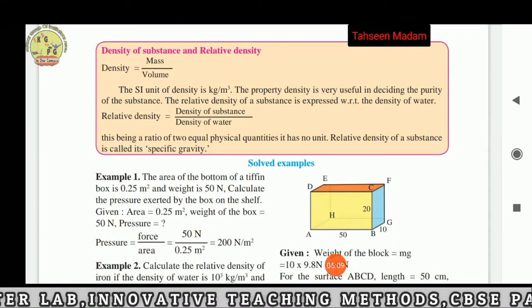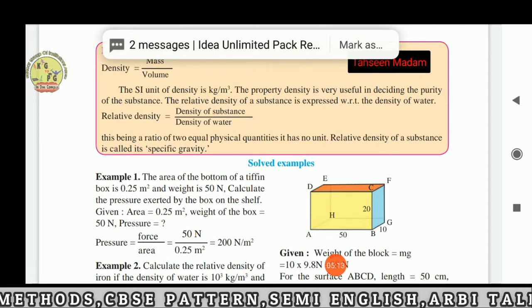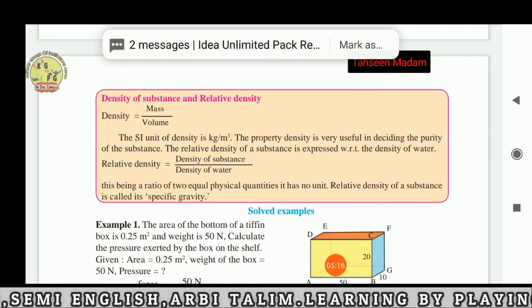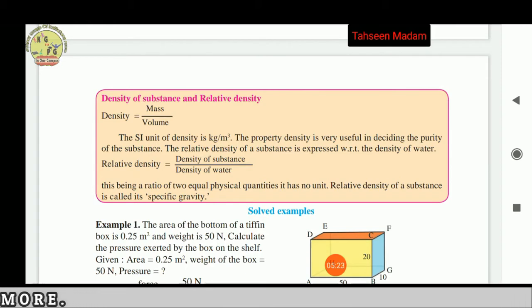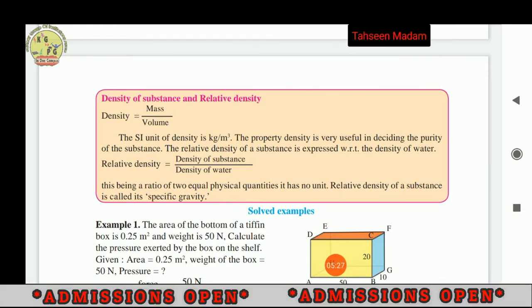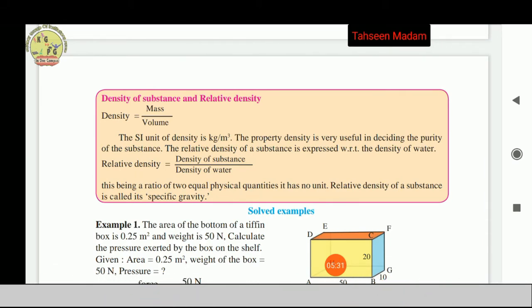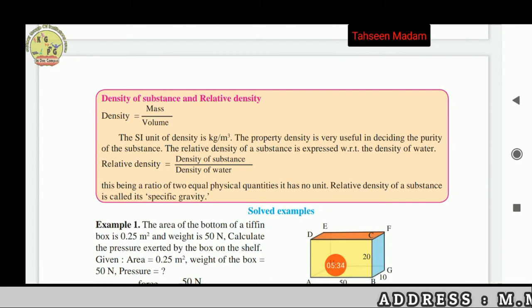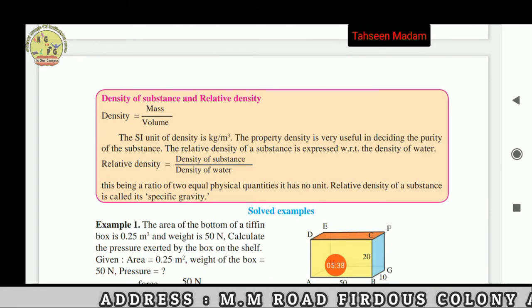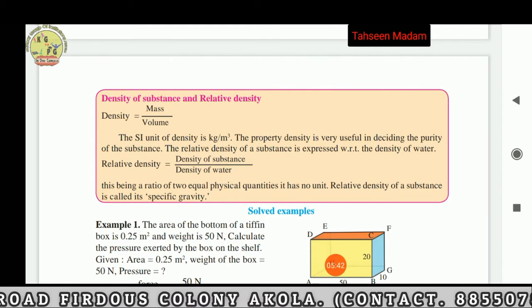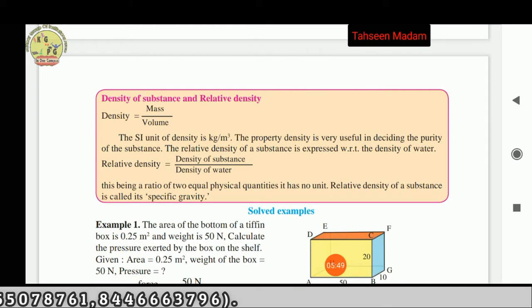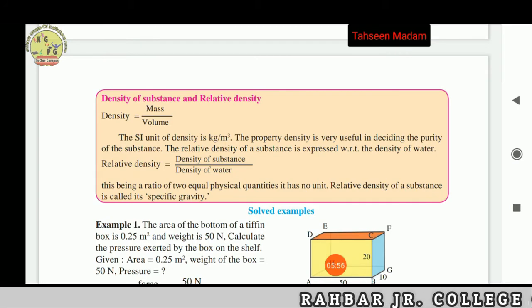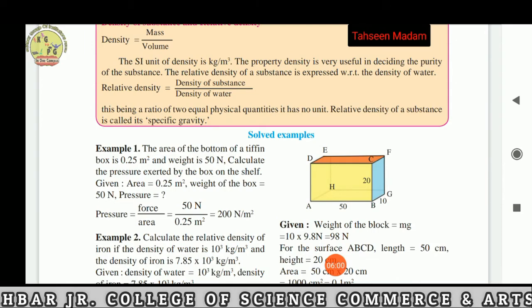Density. Density of substance and relative density. Density is equal to mass upon volume. The SI unit of density is kilogram per meter cube. The property density is very useful in determining the purity of a substance. The relative density of a substance is expressed with respect to the density of water. Relative density is equal to density of substance upon density of water. This being a ratio of two equal physical quantities, it has no unit. Relative density of a substance is called its specific gravity.